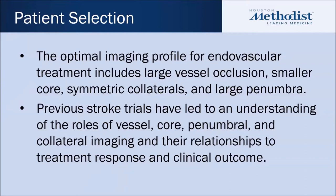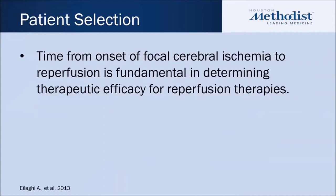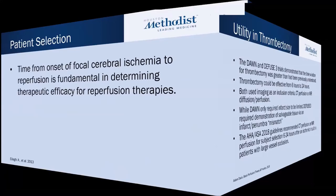The optimal imaging profile for an endovascular patient would be one who clearly has an anterior circulation large vessel occlusion, a small core, symmetric collaterals, and large penumbra — that's the patient where thrombectomy has been shown to have benefit in many studies. Time from onset of focal cerebral ischemia to reperfusion is fundamental in determining the therapeutic efficacy for reperfusion therapy — you really don't want to be dragging your feet in determining whether perfusion is needed. Once you have the perfusion imaging, a wait-and-watch approach doesn't make sense because things can change second by second, minute by minute.